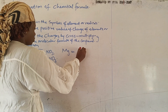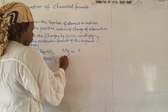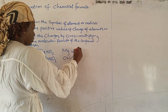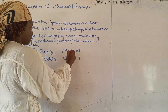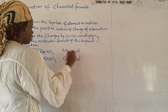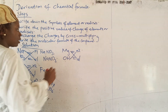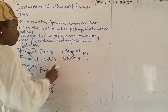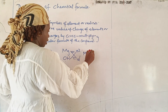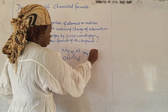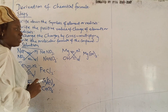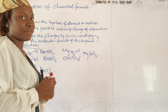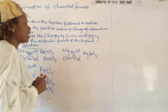Now for magnesium: magnesium has a valency of 2 and OH has a valency of 1. Remember we're writing the positive values. So after cross-multiplying, magnesium gets 1 and OH gets 2. We bracket OH and write the subscript 2, giving us Mg(OH)₂. That is how to write magnesium hydroxide.